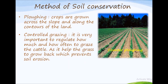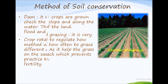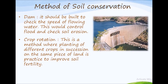Third is contour plowing — in this method, crops are grown across the slope and along the contours of the land, where contours means a boundary or border which is usually curved in shape. This checks the flow of water. Fourth is controlled grazing — it is important to regulate how much and how often to graze cattle, as it helps grass to grow back and prevents soil erosion. Fifth is building dams — dams should be built to check the speed of flowing water, which controls floods and checks soil erosion.